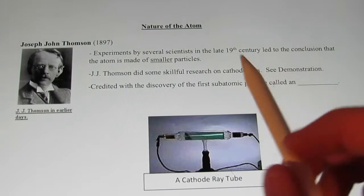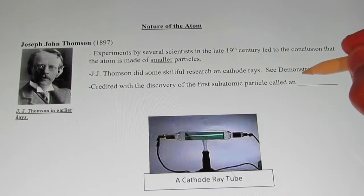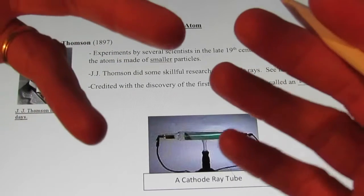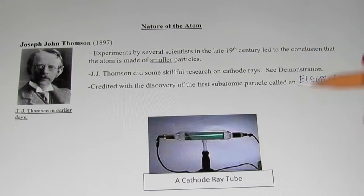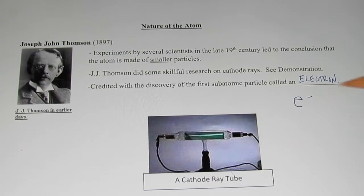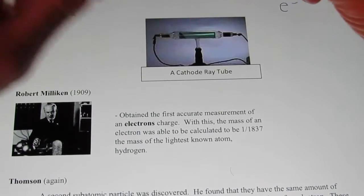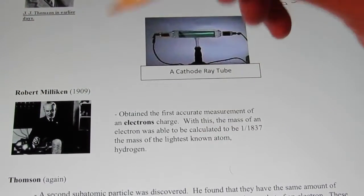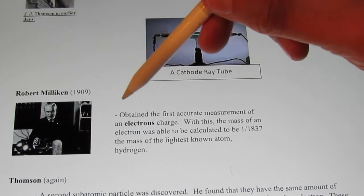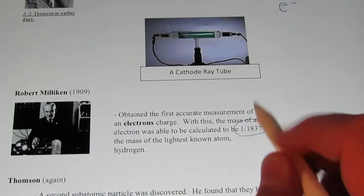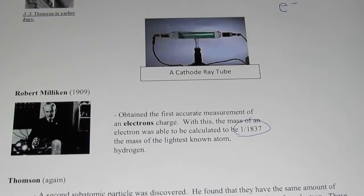J.J. Thomson was credited with the discovery of the first subatomic particle, the electron — about 2,000 times smaller than the smallest known atom, hydrogen. We abbreviate electron with a lowercase e and a negative sign, symbolizing its negative charge. Shortly after, Robert Millikan came on the scene with his famous oil drop experiment and obtained the first accurate measurement of an electron's charge, finding the mass of an electron to be 1/1,837th the mass of hydrogen.